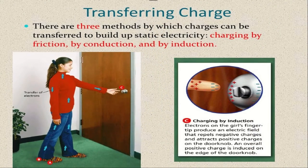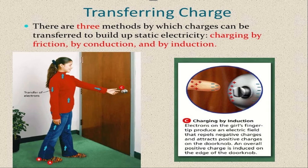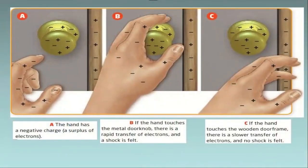There are three methods by which charges can be transferred to build up static electricity: charging by friction, by conduction, and by induction. Electrons on the girl's fingertip produce an electric field that repels negative charges and attracts positive charges on the door knob — an overall positive charge is induced on the edge of the door knob. In the first case the hand has a negative charge; in the second case, if the hand touches the metal door knob there is a rapid transfer of electrons and a shock is felt.